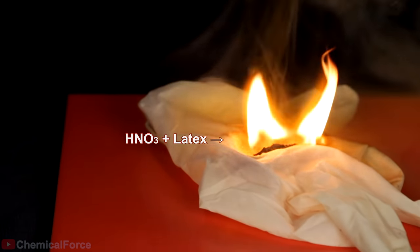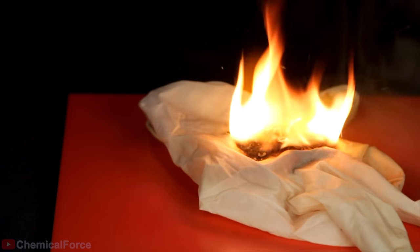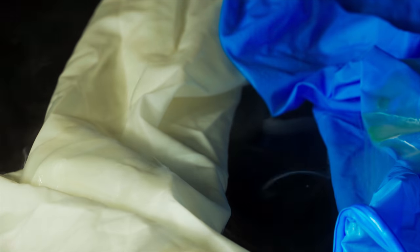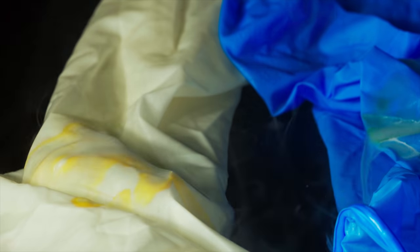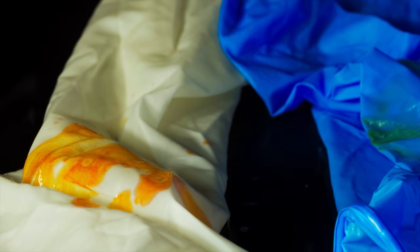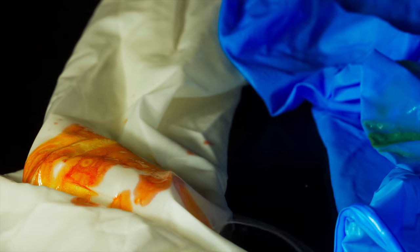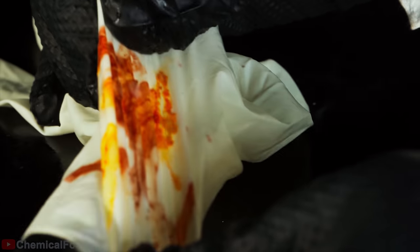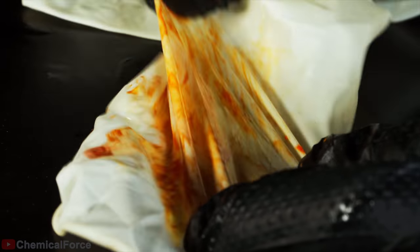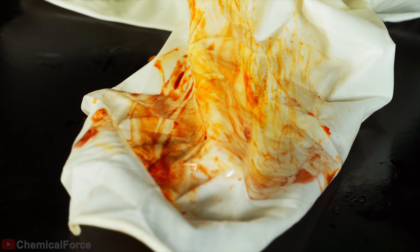Fuming nitric acid is able to set latex gloves on fire, but what can fluoroantimonic acid do with them? A long-time contact results in the color change, which clearly tells there is a chemical reaction with latex. However, unlike nitrile gloves, latex gloves turned out to be quite durable when being stretched. So, two pairs of latex gloves must be enough to protect your hands from accidental contact with fluoroantimonic acid.